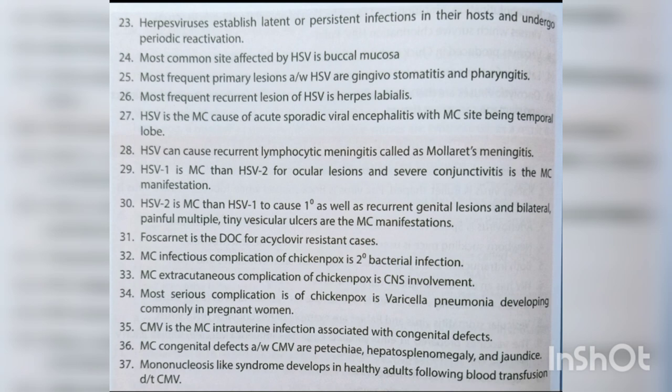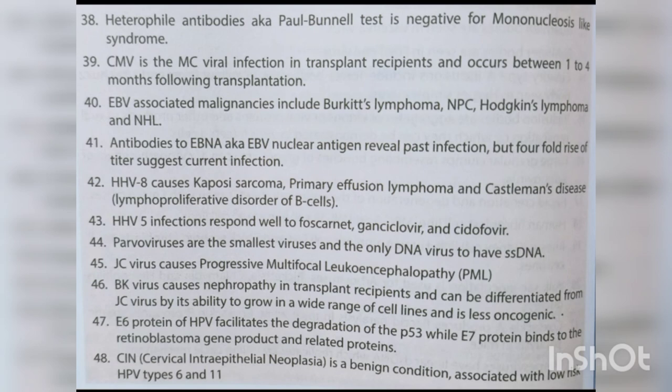Foscarnet is the drug of choice for acyclovir-resistant cases. Most common infectious complication of chickenpox is secondary bacterial infection; most common extracutaneous complication is CNS involvement; most serious complication is varicella pneumonia, developing commonly in pregnant women. CMV is the most common intrauterine infection associated with congenital defects; most common defects are petechiae, hepatosplenomegaly and jaundice. Mononucleosis-like syndrome develops in healthy adults following blood transfusion due to CMV; heterophil antibodies (Paul-Bunnell test) are negative in this syndrome. CMV is the most common viral infection in transplant recipients, occurring 1-4 months post-transplantation.